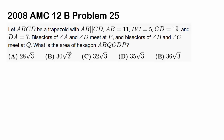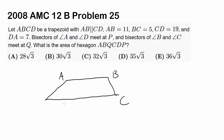Let ABCD be a trapezoid with AB parallel to CD. When the last question on AMC is geometry, you better watch out — you don't know what's going to happen. AB is 11, BC is 5, CD is 19, and DA is 7. So let's draw this out. We have a trapezoid and CD is longer than AB, so I'm drawing it like this. AB is 11, BC is 5, CD is 19, and DA is 7. So far we at least know what it's talking about, which is very good.